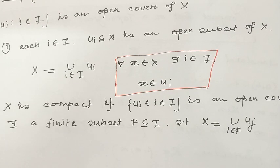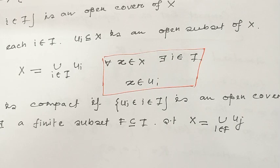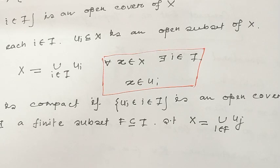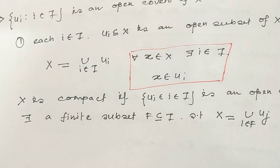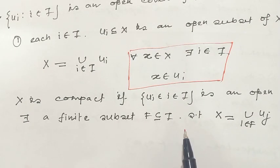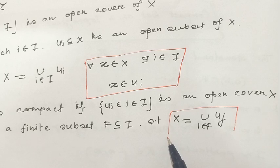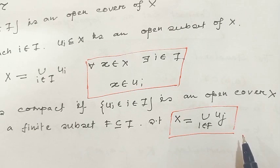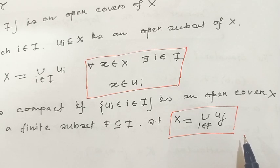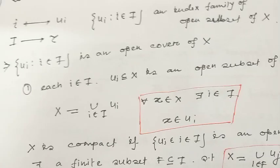Then X is compact if every open cover {U_i : i ∈ I} has a finite subcover — meaning there exists a finite subset I₀ of I such that X equals the union over i in I₀ of U_i. This is the definition of a compact set: if every open cover has a finite subcover. This is the same definition as before, only here the index set is explicitly noted.